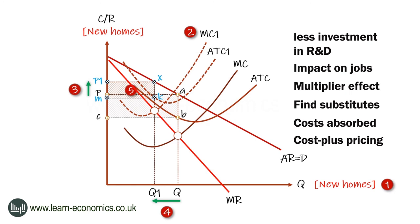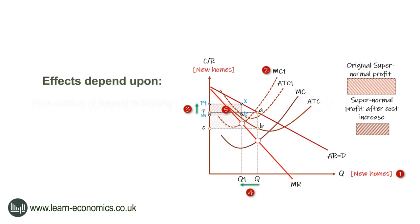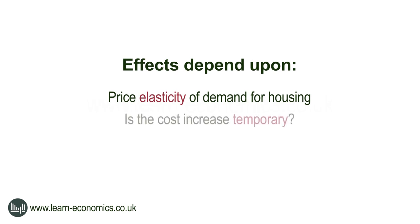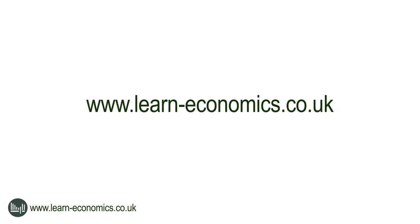The increase in the cost of cement is likely to raise the price of new houses, reduce the quantity of houses built, and result in lower profits for house builders. However, the price effect is uncertain and depends upon a range of other factors including PED. It also depends on whether the cost increase is a temporary one-off shock or is expected to be a permanent change. Finally, the level of market competition between house builders can also affect the impact — the more competitive the market, the less likely price will increase.